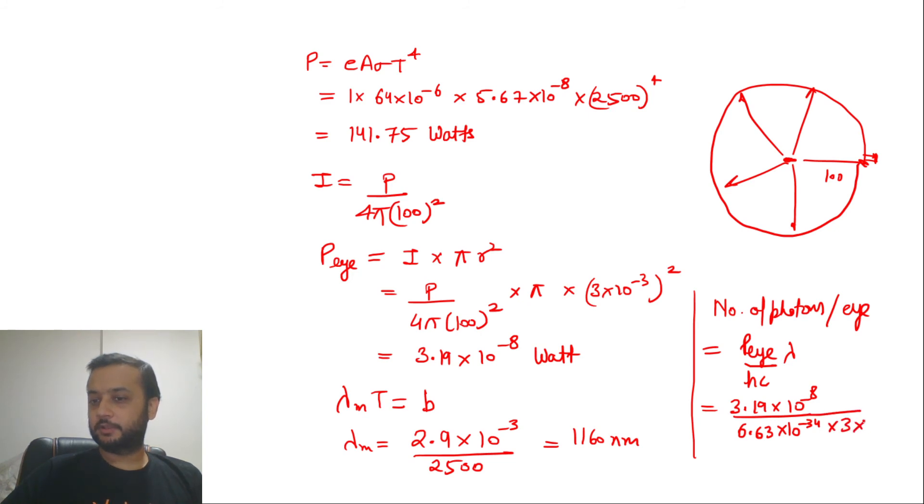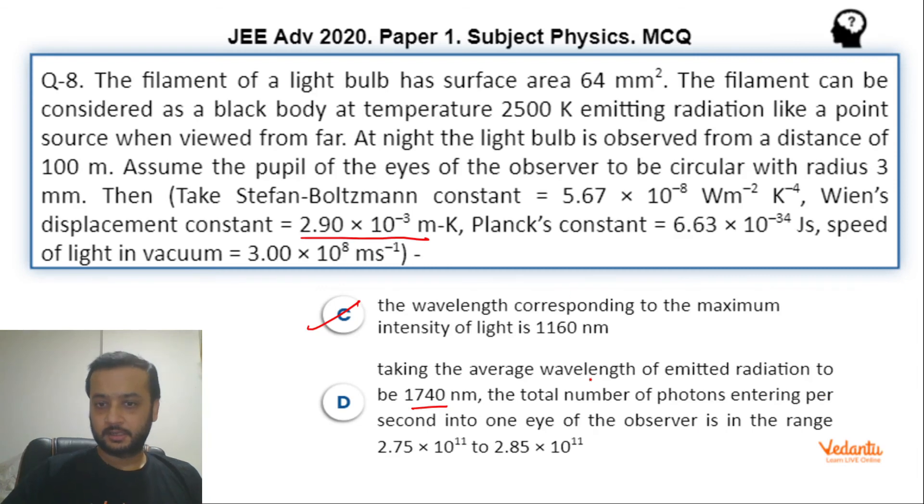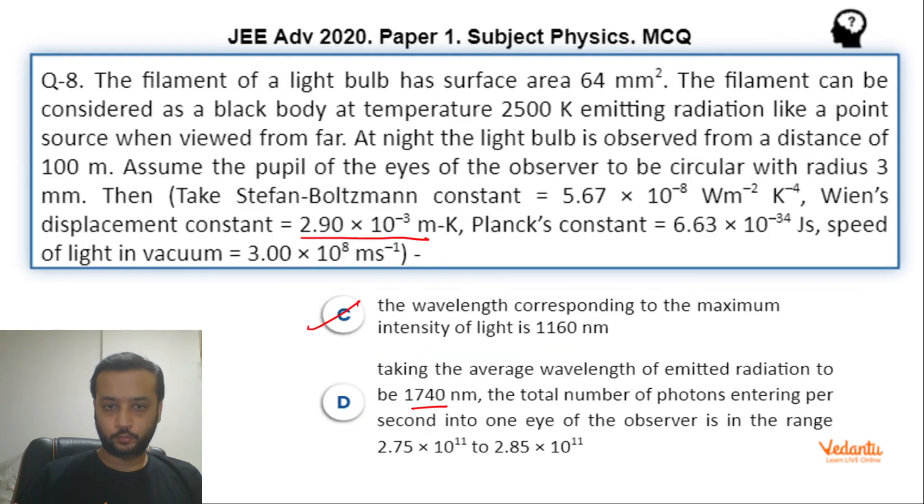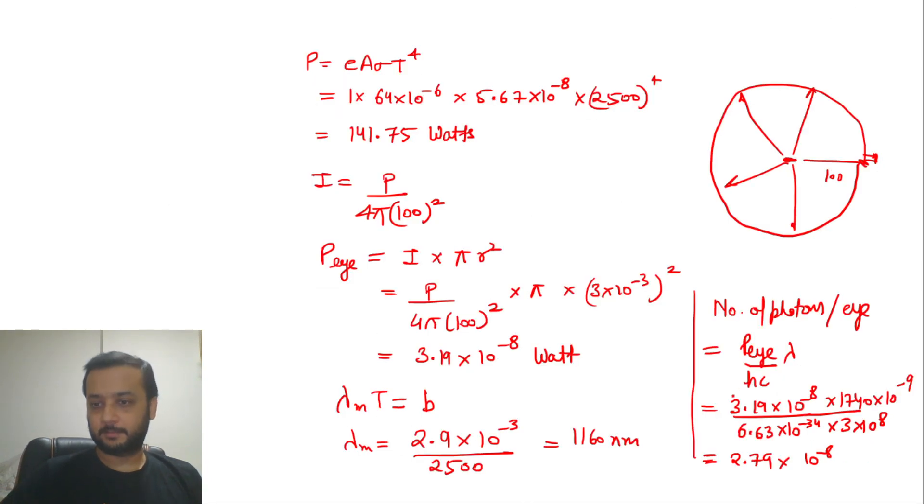This is 3.19 × 10⁻⁸ divided by h value 6.63 × 10⁻³⁴, speed of light 3 × 10⁸, and lambda average given is 1740 × 10⁻⁹. When we solve this, the value comes to 2.79 × 10¹¹.